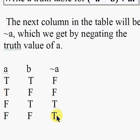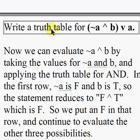Again, our question says write a truth table for (~a ^ b) v a, or the quantity not-a and b, or a. Now we can evaluate ~a ^ b by taking the values for ~a and b, and applying the truth table for AND.